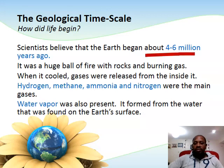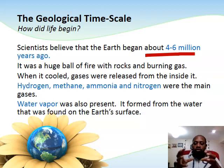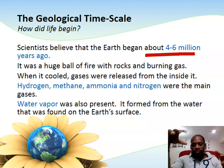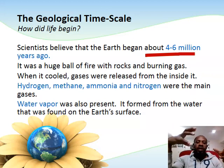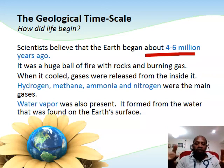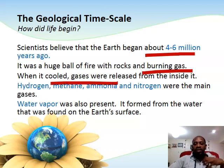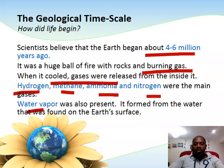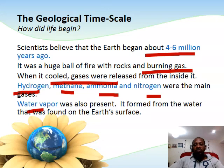Scientists believe that the Earth began about 4.6 billion years ago. The Earth came into being as a huge ball of fire — like a meteorite shot out into space following the Big Bang, when the whole galaxy was formed and many meteorites were ejected into space. The Earth was essentially a molten rock of lava with burning gases on it. When it cooled down, gases were released from the Earth's core, including hydrogen, methane, ammonia, and nitrogen. Water vapor was also present, but notably there was no oxygen — most scientists believe there was no oxygen at the beginning of time, though a few believe small amounts may have been present.